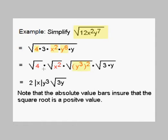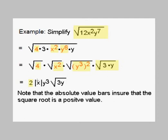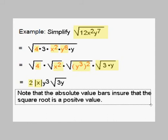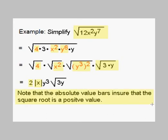We rewrite and separate the radicals. We have the square root of 4, times the square root of x squared, times the square root of y cubed quantity squared, times the square root of 3y. The square root of 4 turns into 2. The square root of x squared turns into x, but we use absolute values. Note that the absolute value bars ensure that the square root is a positive value, and that is exactly why we have to use them.